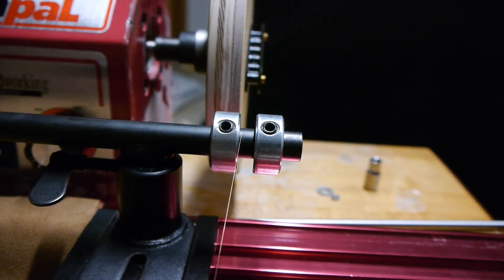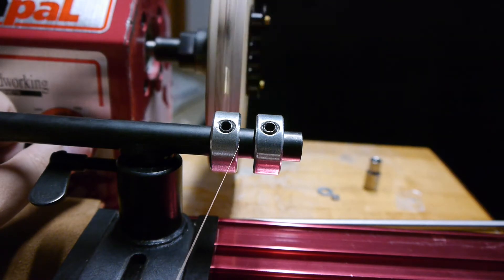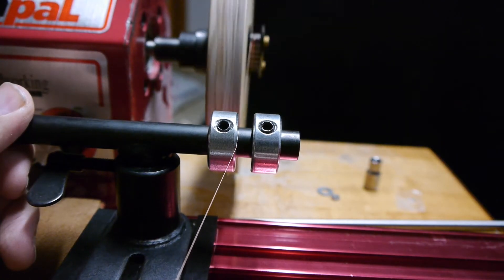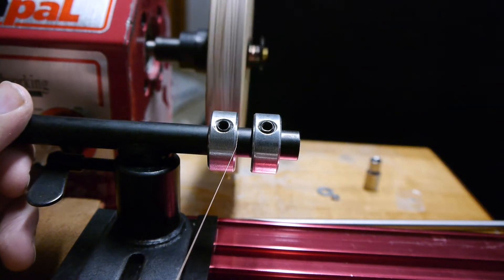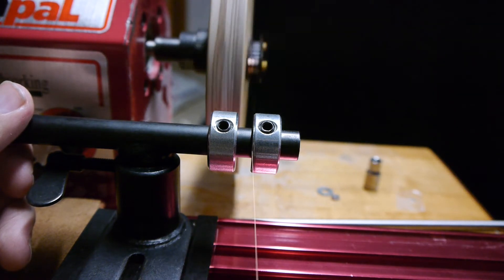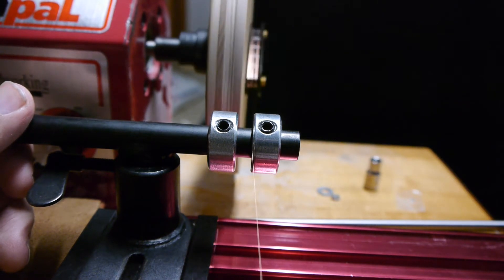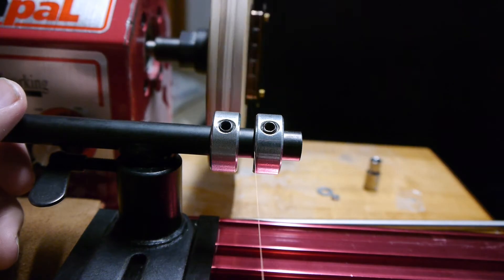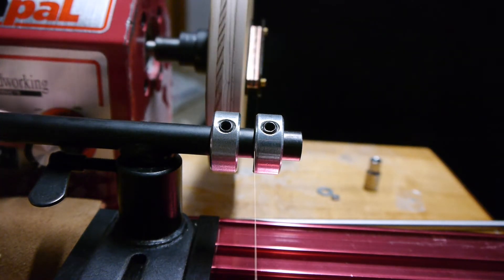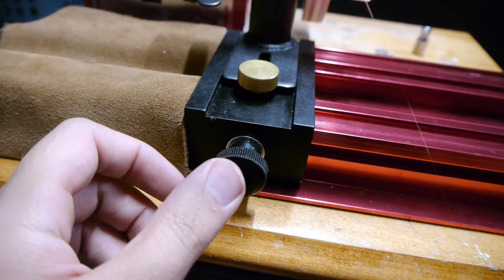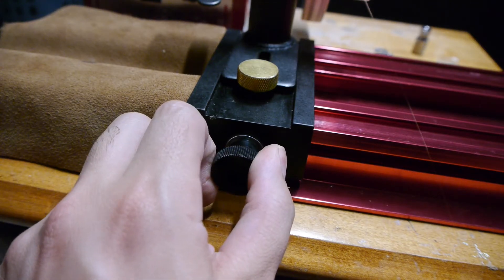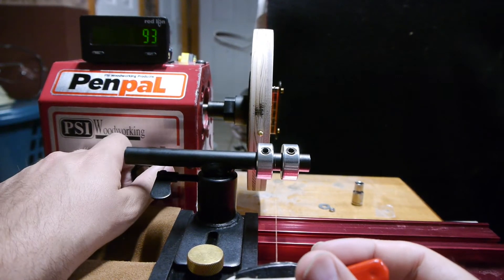So once I have the bobbin width set, I'm going to turn on the winder at a very low RPM and just move this side to side until it lines up perfectly with the edge of the bobbin. And I can see that I'm getting to the very edge on both sides with no risk of going over the edge. Once I'm happy with the position, I'll turn this knob to lock it in place. So now we have our limiter locked in place.